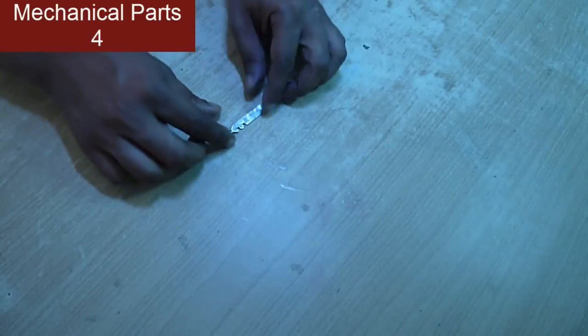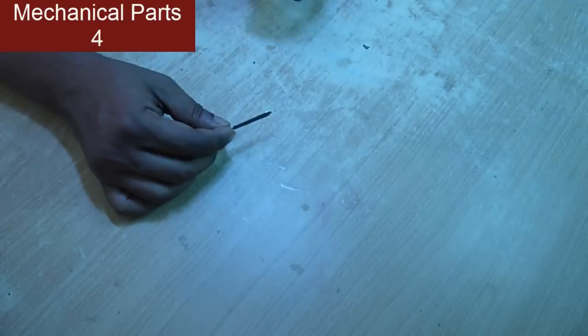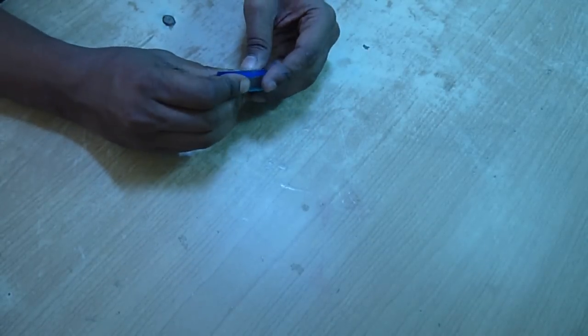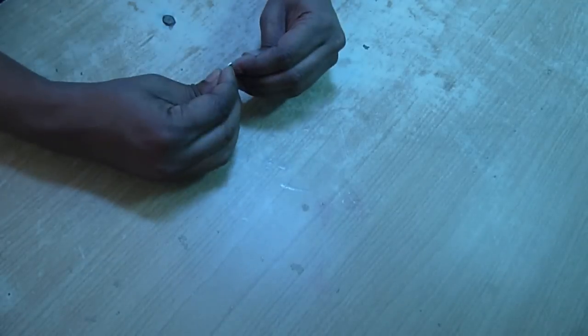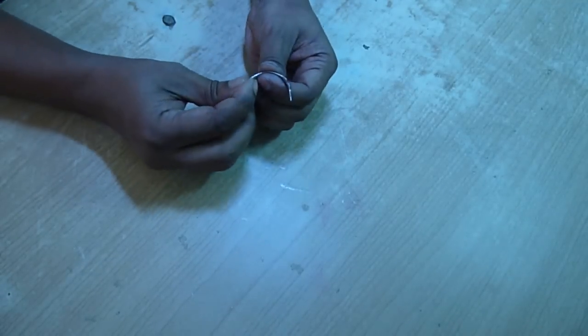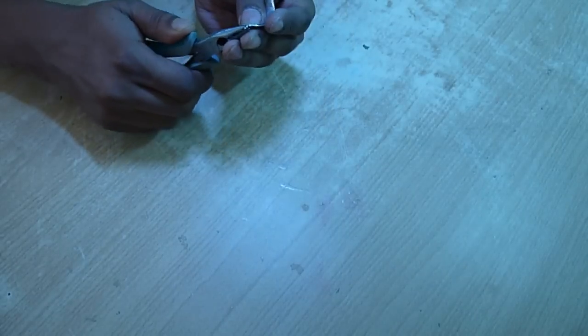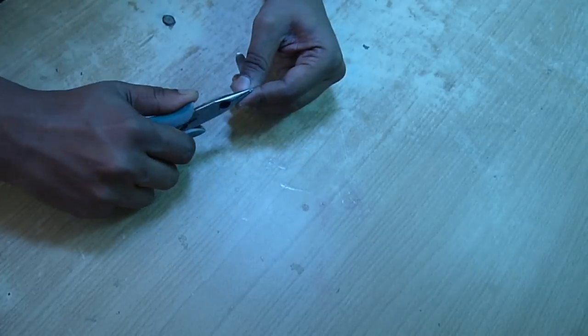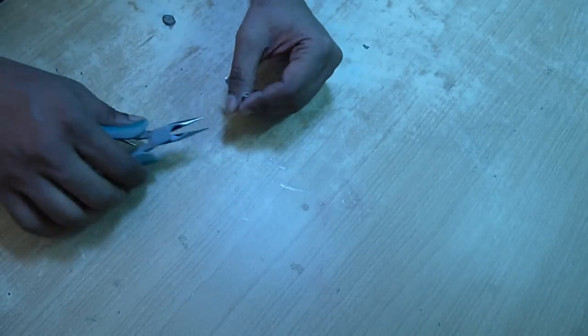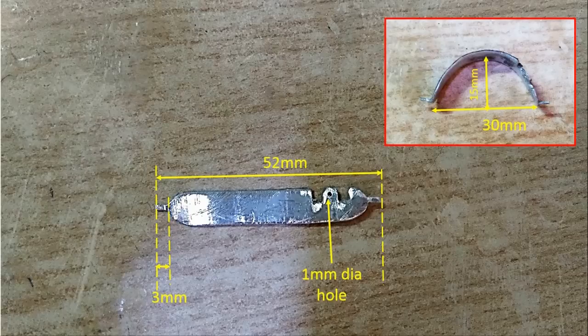Now the fourth mechanical part is the upper eyelid. This is the shape we have cut from the aluminum sheet. Give it a curved shape. Here we are going to use your hand because these are thin aluminum sheets. Bend both ends 90 degrees. This will be used as notch to connect with the eyeball holder. These are the dimensions.